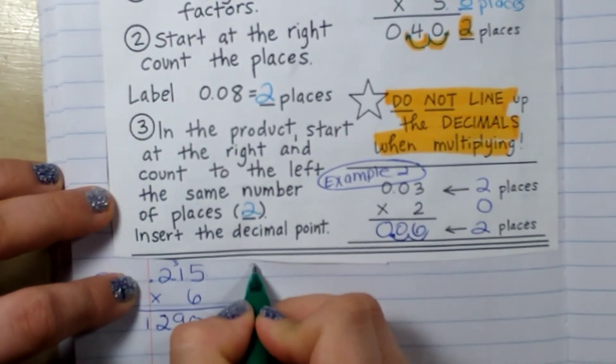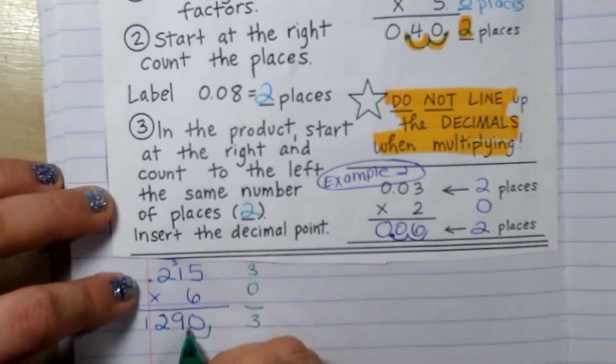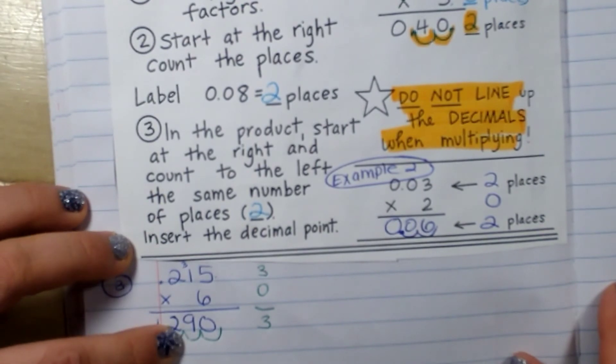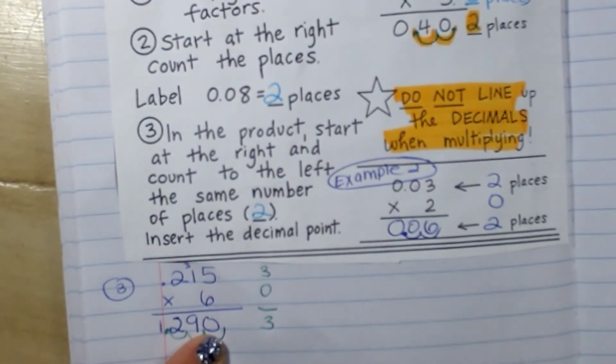Now I have 3 place values here. I have 1, 2, 3 behind. I have 0 here. So I'm going to move it 1, 2, 3 place values. So my answer is 1 and 290 thousandths or 290 thousandths. It's the same thing.